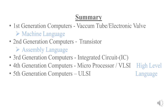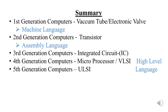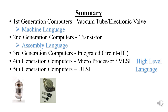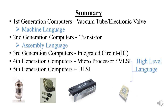To summarize, the technology used in the first generation was vacuum tubes (electronic valves) with machine language. The second generation used transistors with assembly language. The third generation used integrated circuits. The fourth generation used microprocessors. The fifth generation used ULSI, with high-level language.